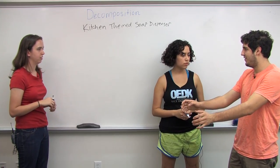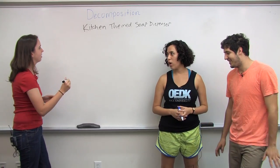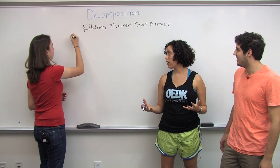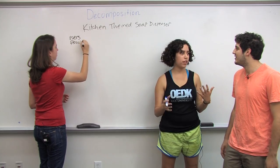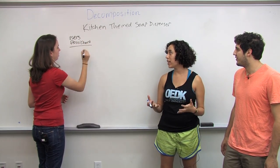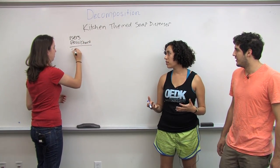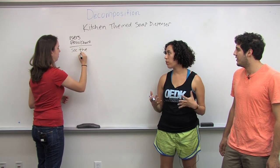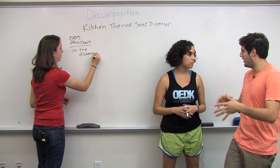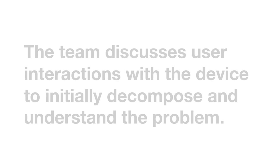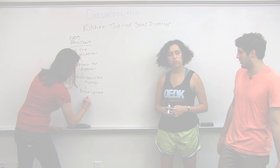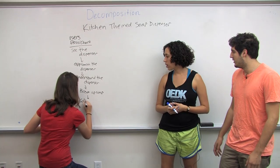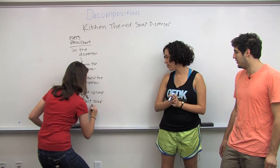So this thing is in the bathroom. How do we use it? First the user would see it — so this is like a user's flowchart. They come into the bathroom, they use the bathroom, and then they come out and they need to use soap to wash their hands. So they see it, they approach it, because they have to figure out what it does. And then the user does something to collect the soap, and then wash hands.